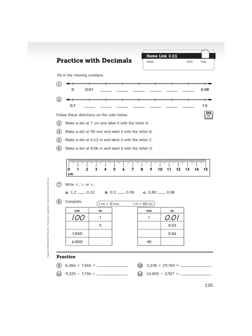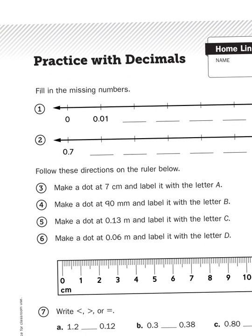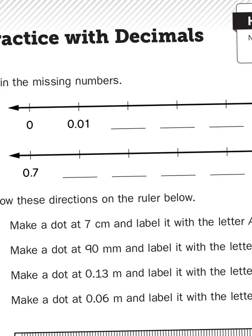If you take a look at the first two problems, we have some number lines. This first number line begins with zero, and then the following number along that number line, the next little hash mark there is one hundredths, 0.01. So what you would do then is just fill in the next numbers in the sequence. Well, what comes after one? Well, that would be two and three and four and so on.